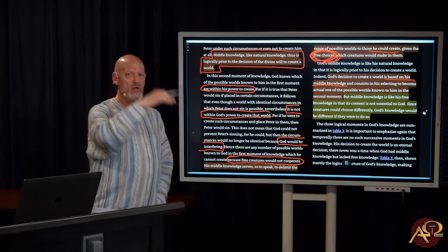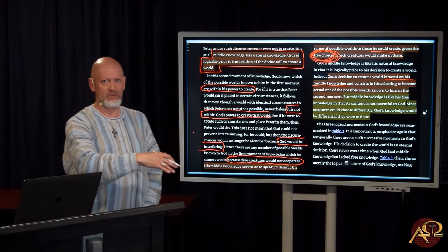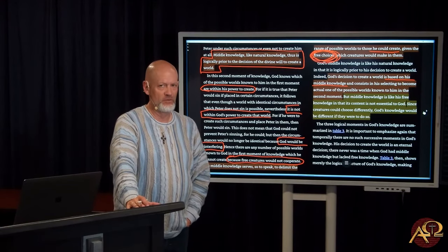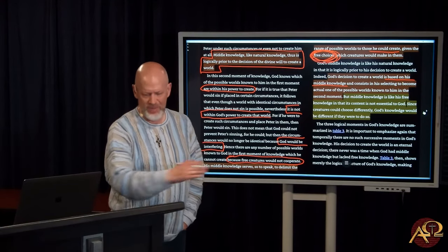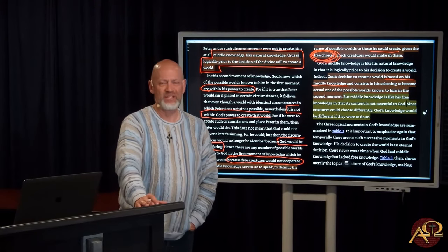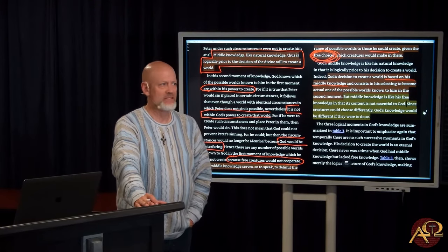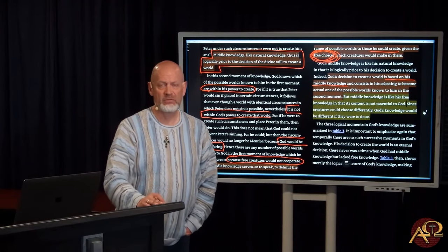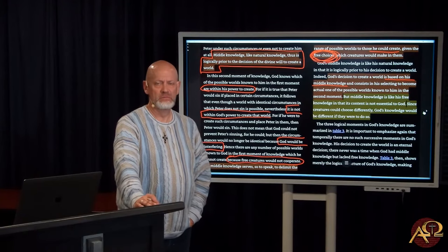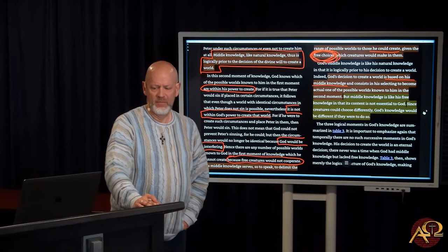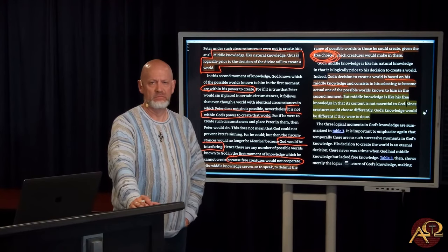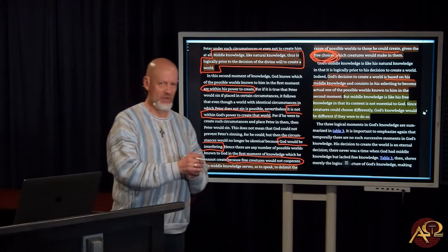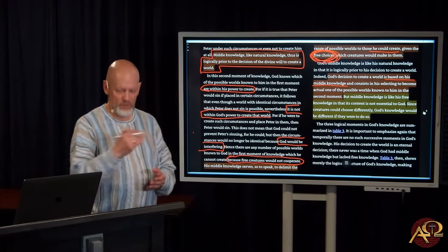That's why I said last time, talk about Saul, talk about Matthew 11, all you want—none of that is middle knowledge because it's all part of the created order. It always, it's all come after the decree to create. So God knows Saul, he knows what he would do, but that's not some theoretical Saul before the creation. He knows what Saul will do because he made Saul, he created Saul. He knows what the men of Keilah and Bethsaida would do because he created them. His will is behind all that. You can't get middle knowledge out of that. Don't abuse scripture that way. That's post-decree.